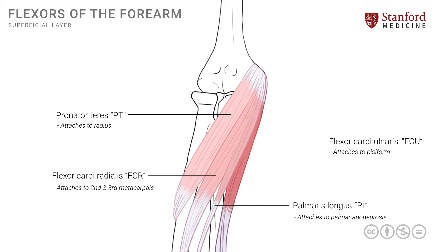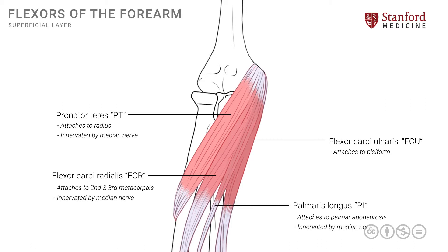These are the four muscles typically described as the superficial muscles of the forearm flexor group. They have an interesting nerve supply. The pronator teres, along with the FCR and the palmaris longus, are all supplied by the median nerve. The flexor carpi ulnaris is an exception and is innervated by the ulnar nerve.